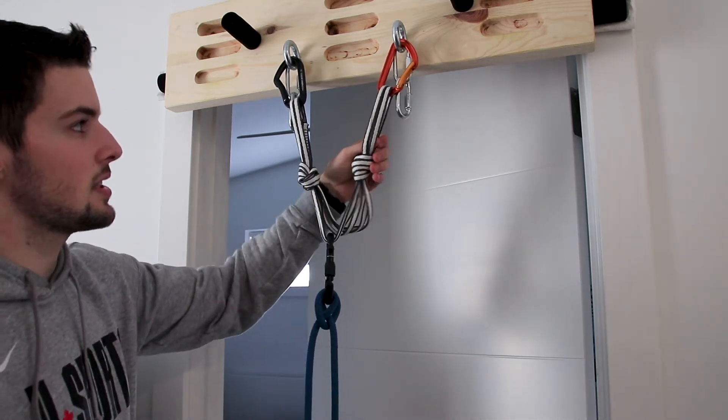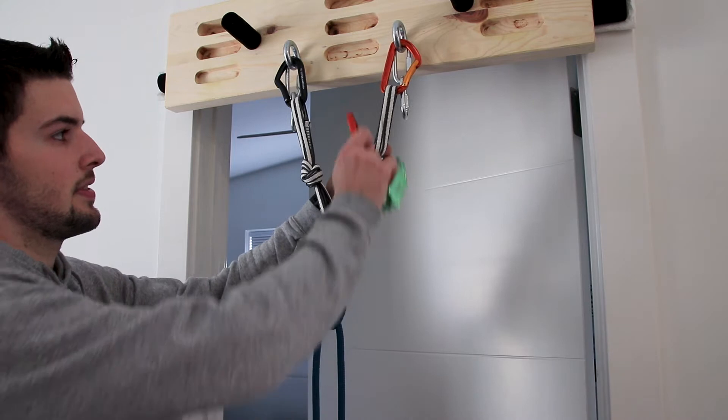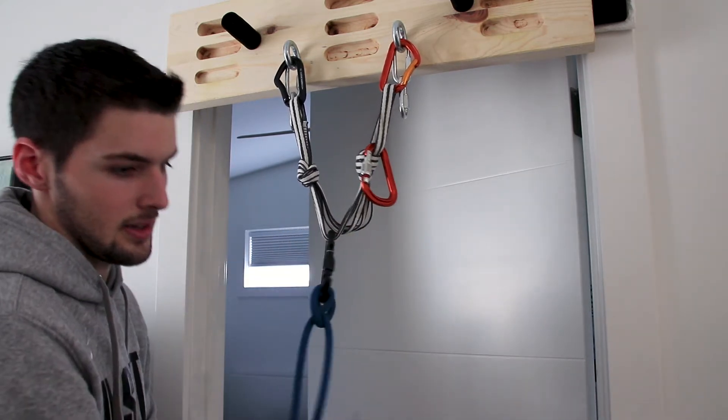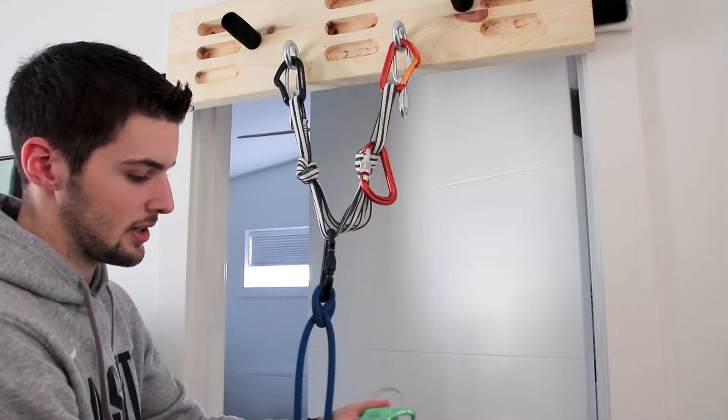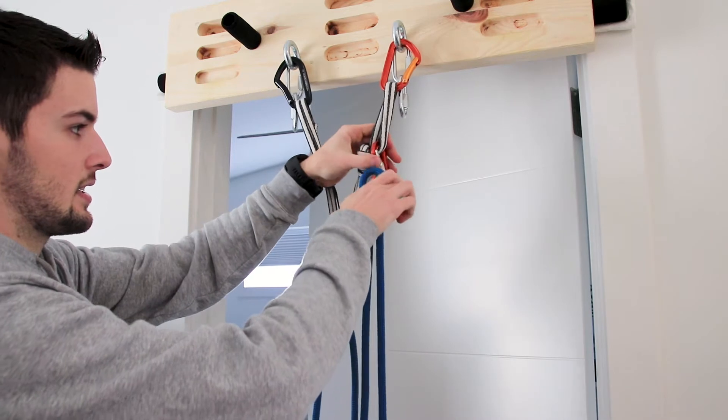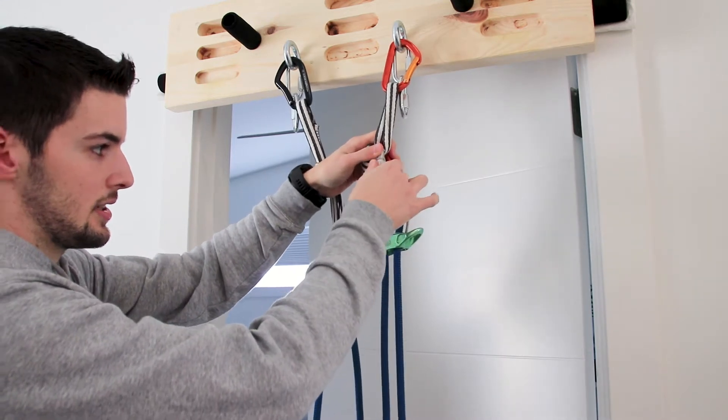To set up your belay device we're going to use the shelf here. Just clip that through and then you can have all the slack pulled in and your climber is ready to go on the next pitch. Slide the rope through your belay device, put it through the carabiner and lock it.